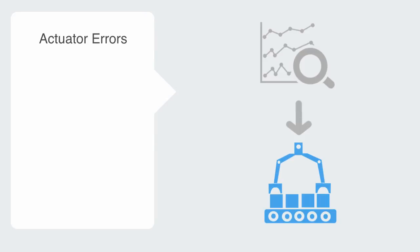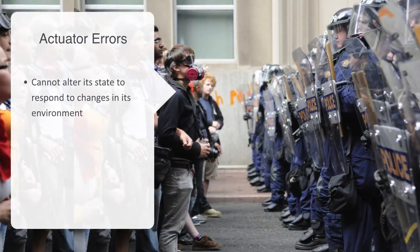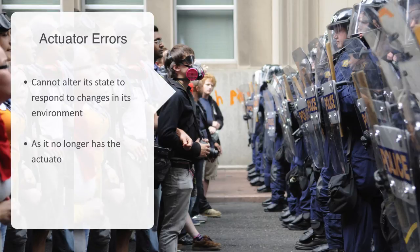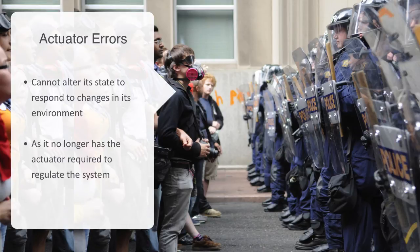Thirdly, without the functioning of the regulatory system's actuator, the instructions created by the logic unit cannot be executed upon, and thus the system cannot alter its state to respond to the changes in its environment. If a nation's law enforcement agency refuses to execute on a court's legal decree to disband a popular protest, then the government is essentially out of control, as it no longer has the actuator required to regulate the system.